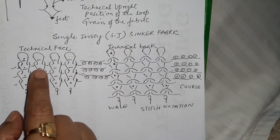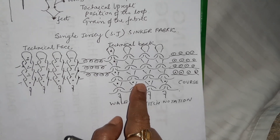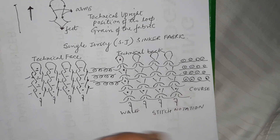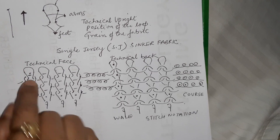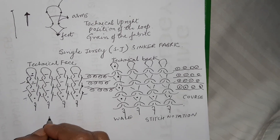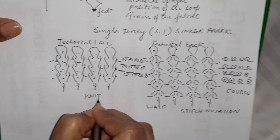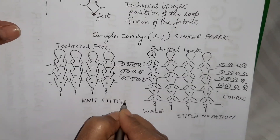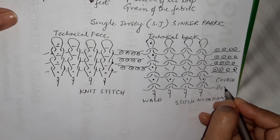That's the technical face and that's the technical back. This is the face loop and this is the reverse loop, also called the back loop. When it knits like this it is called a knit stitch; the other is called a purl stitch.